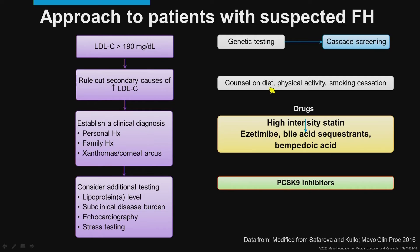We counsel patients on diet, physical activity, and smoking cessation. The main cornerstone of therapy is high-intensity statins. We can add ezetimibe, bile acid sequestrants, or bempedoic acid to get LDL to goal. If still not at goal, PCSK9 inhibitors can be used. Typically, in the primary prevention setting we aim to reduce LDL cholesterol by 50% and get it down to less than 100 milligrams per dL. In the secondary prevention setting, we aim to get LDL down to less than 70 milligrams per dL.